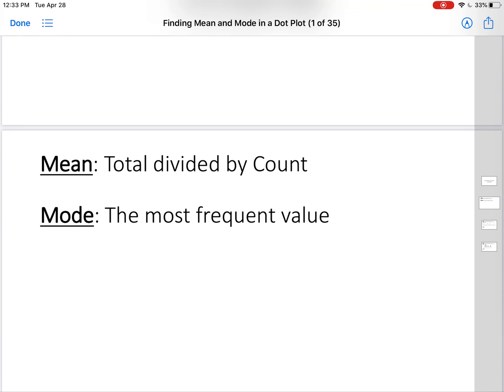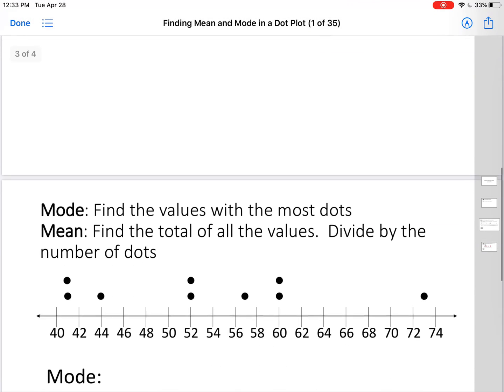Remember, the mean is the total divided by the count. The mode is the most frequent value. So let's get to it.